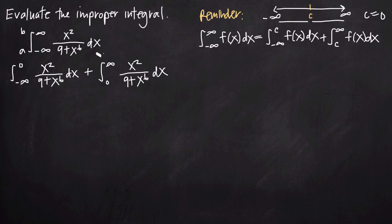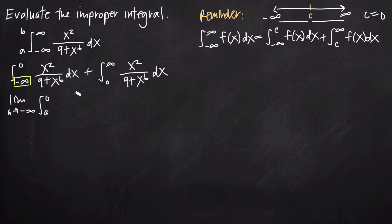We know from studying improper integrals of case type 1 and 2 that we need to remove the infinite limit of integration and replace it with some constant, then take the limit as that constant goes to negative infinity or positive infinity. In this first integral, we remove the problem limit of integration and replace it with a constant a, saying the limit as a goes to negative infinity of the integral from a to 0 of x squared over 9 plus x to the 6th dx.